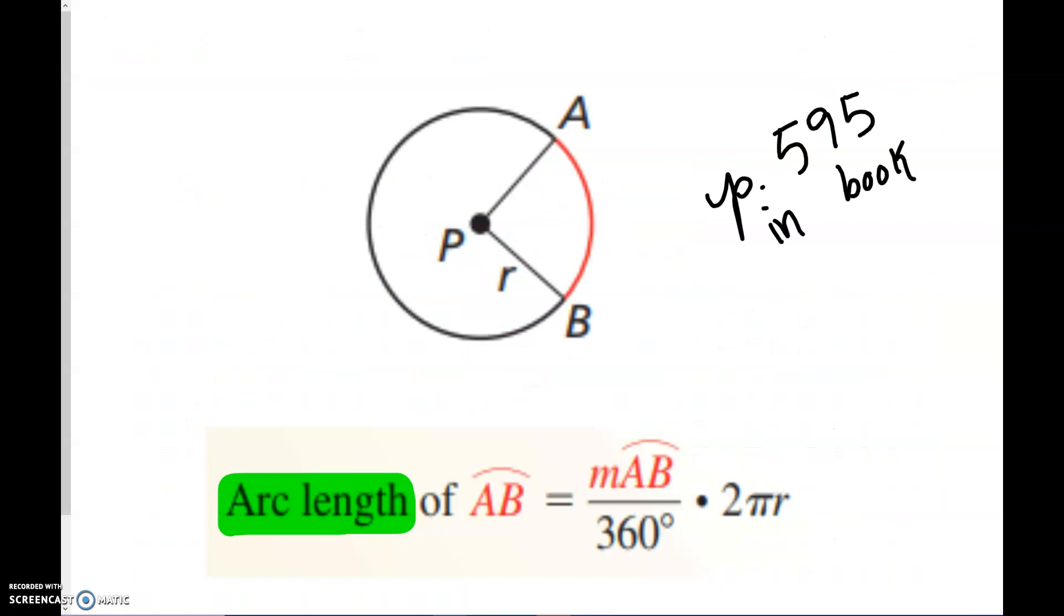So what formula does that lead us to? Well, in page 595, in your book, they have this for finding the arc. And we're always going to take the measure of this arc, whatever degree we want, and divide by 360. And then this is just your circumference.